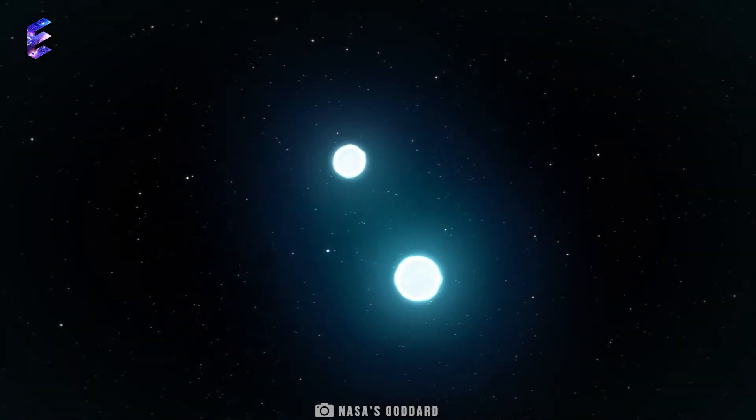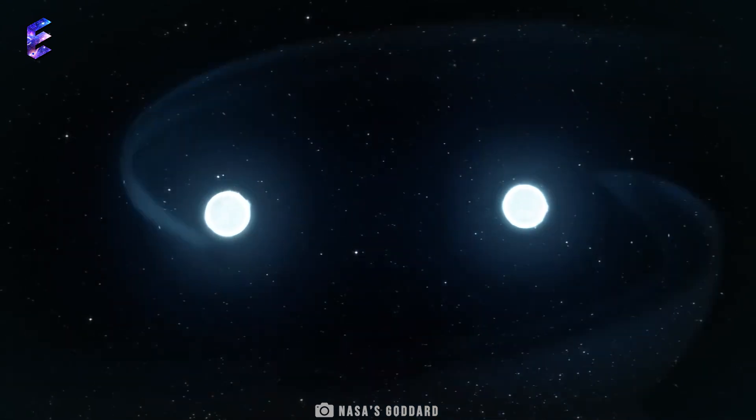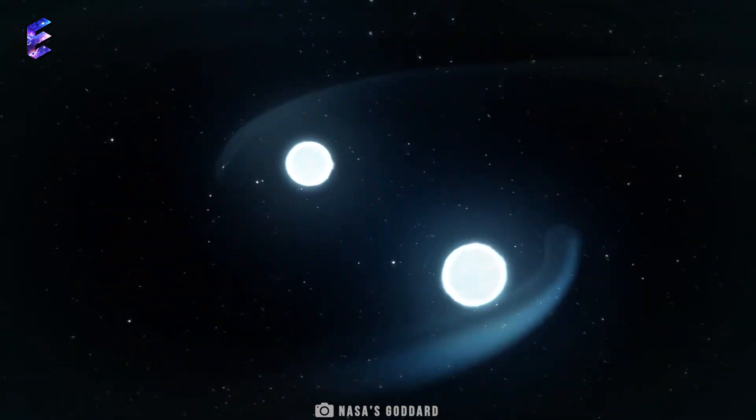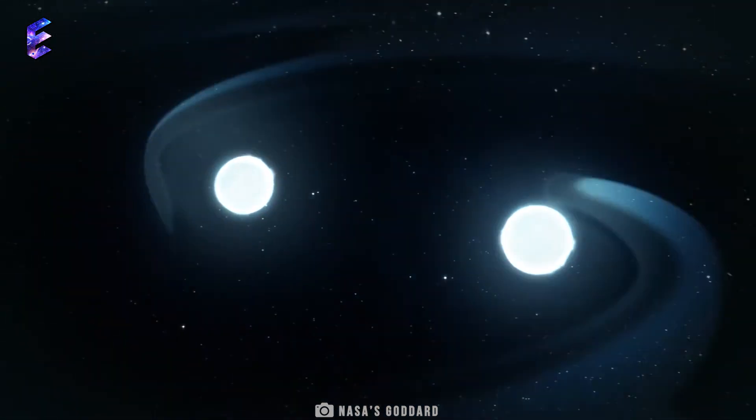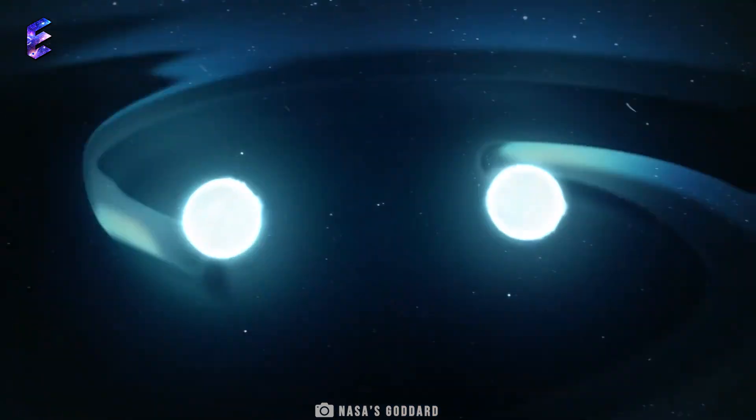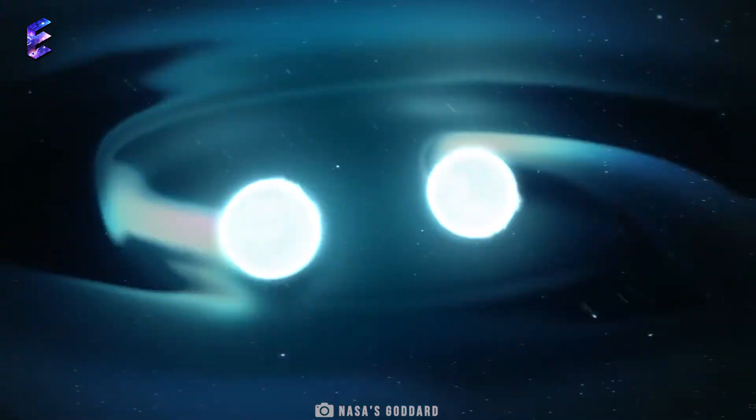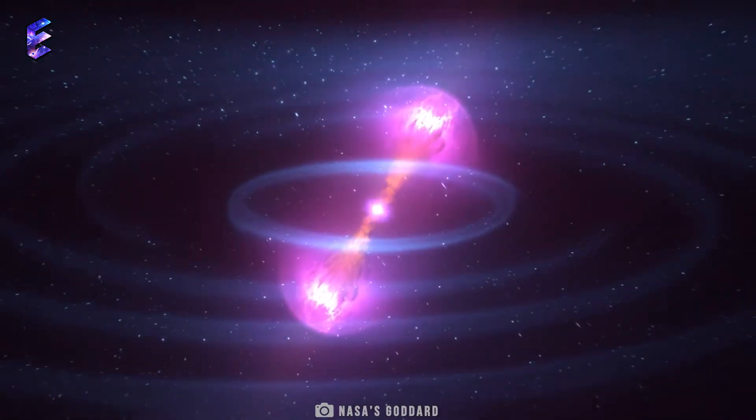The other way a GRB is thought to be generated is during the merger of two neutron stars. Energy equivalent to what the Sun will release in its entire 10 billion-year lifetime is released in the matter of a few seconds in a GRB.